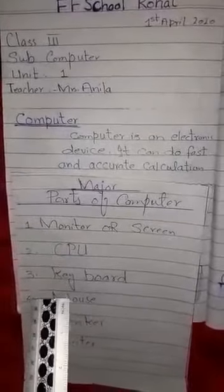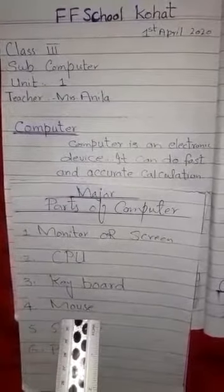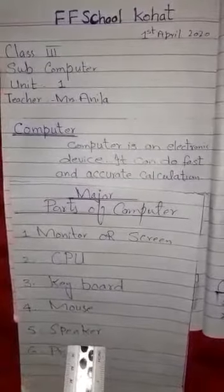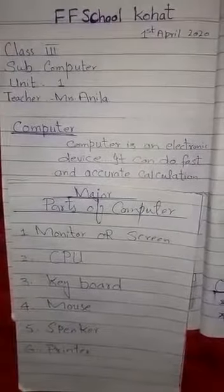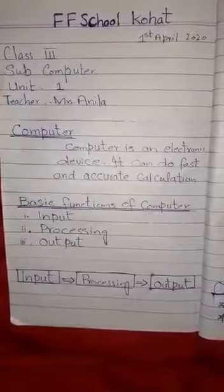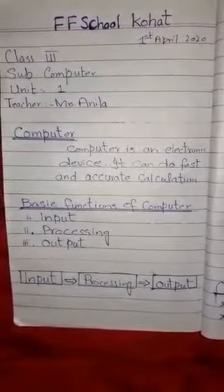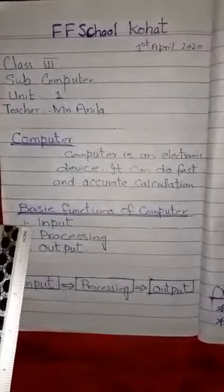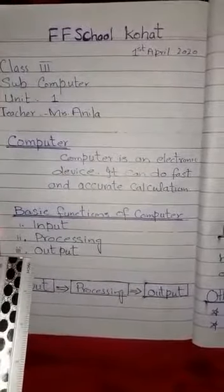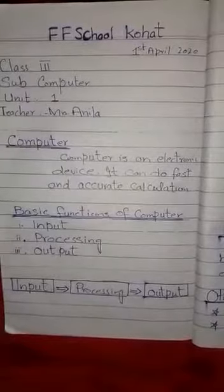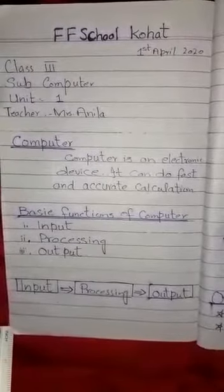Third is the keyboard; fourth is the mouse; fifth is the speaker; and sixth is the printer. Any computer performs three basic functions: these functions are input, processing, and output, performed by different parts and helping devices of the computer.